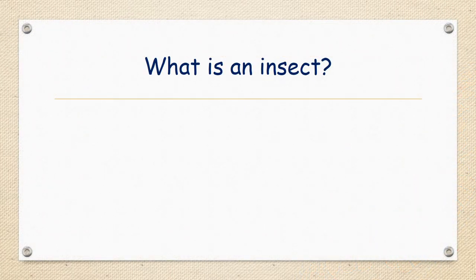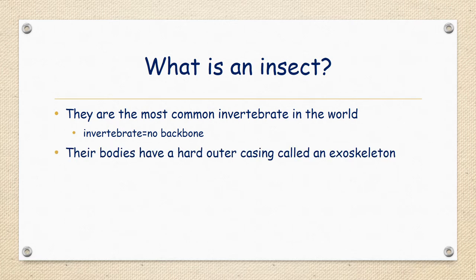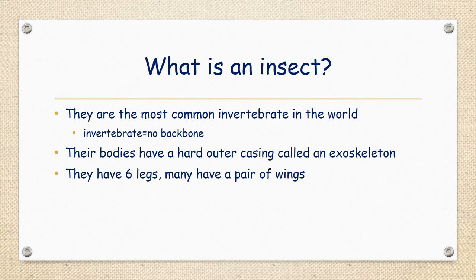Before we do that, let's look at what is an insect. Insects are the most common invertebrates in the world. An invertebrate is an animal that does not have a backbone. Their bodies have a hard outer casing called an exoskeleton. We have a skeleton on the inside of our bodies under our skin, but their skeleton is on the outside. They have three pairs of legs — six legs in total — and many also have a pair of wings, though not every insect has wings.